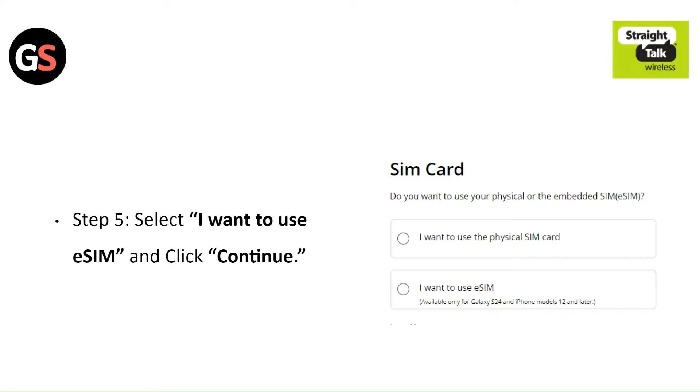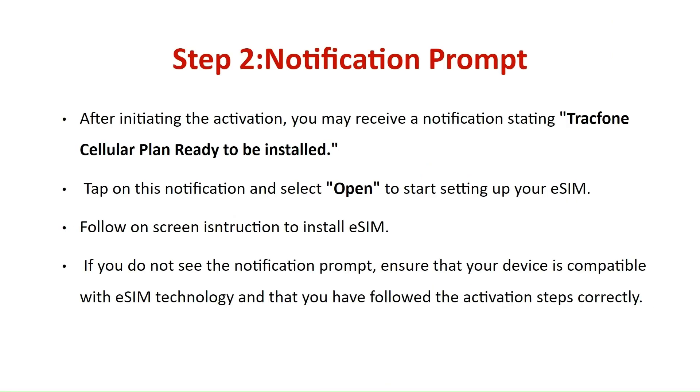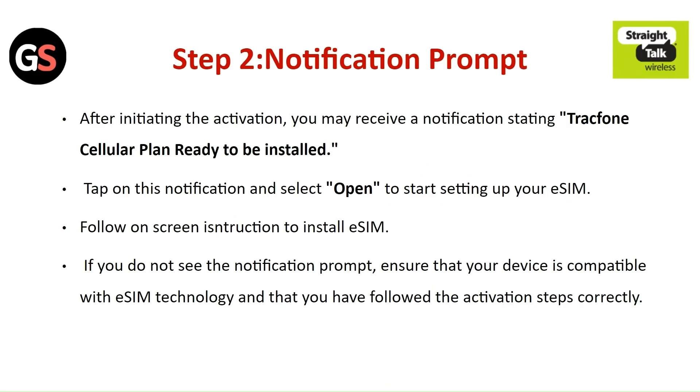Step 5: Select 'I want to use eSIM' and click Continue. Step 2: Notification prompt. After initiating the activation, you may receive a notification.